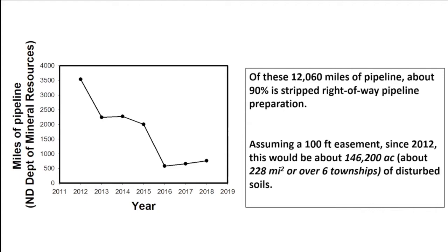If you're a landowner, that's quite a bit of land across the stretch of one of your fields or one of your pastures. That's where we come in — we work for the North Dakota Agriculture Experiment Station. Our stakeholders are the farmers and the ranchers and the industry personnel of the state, and that's where our passion and wanting to help comes from.